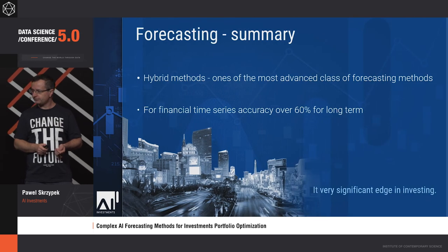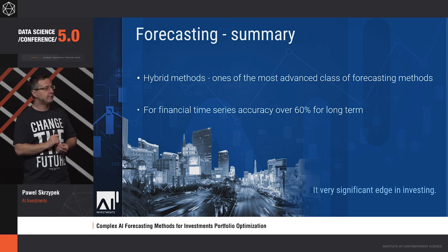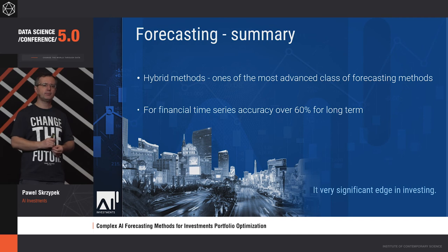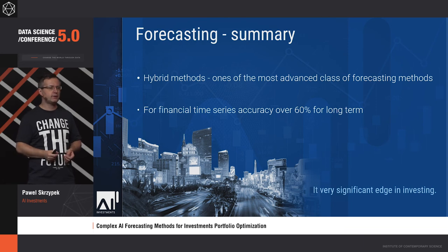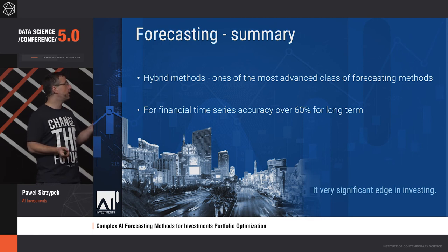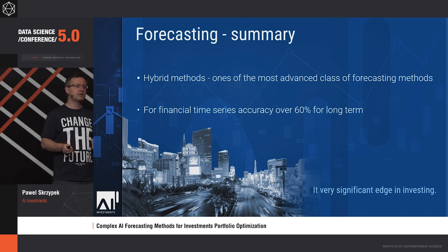To summarize the forecasting: the M4 competition, at least from my perspective, changed the forecasting world and showed that hybrid methods and machine learning methods are becoming significant. Using the best hybrid method improves forecasting accuracy by up to 10 percentage points, allowing us to achieve in the long term a 60 percent accuracy — which is a real edge for investing.